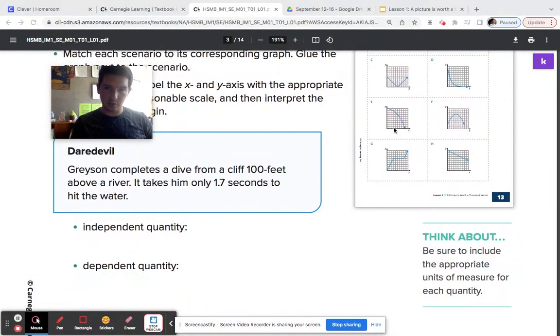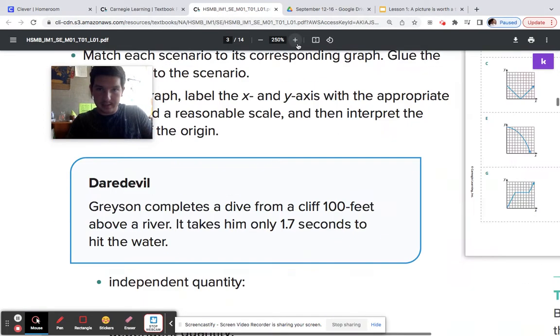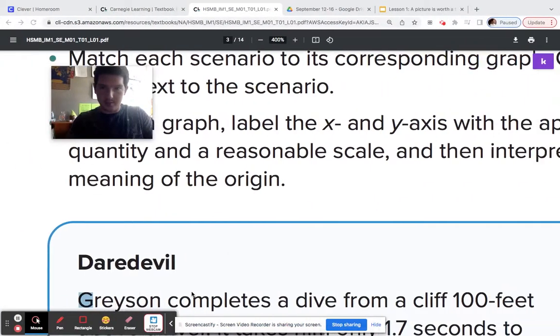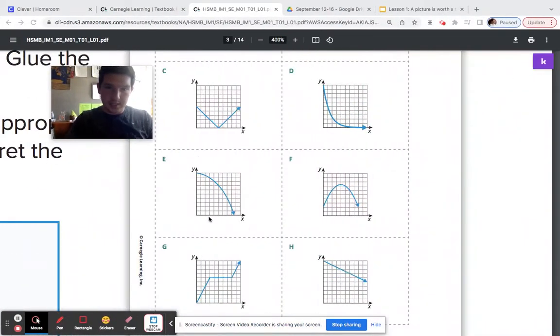And if you're looking at a graph, we would represent this here. This x-axis would represent time, of him getting out there to that distance there.